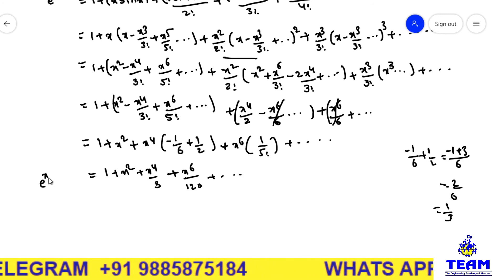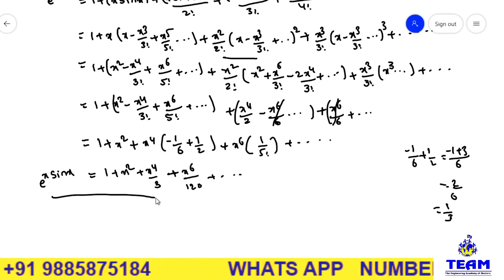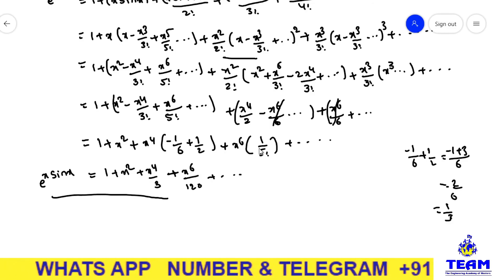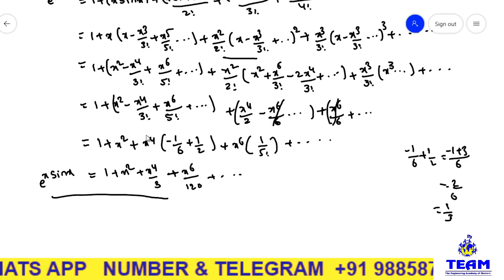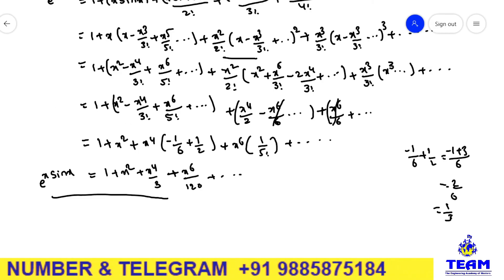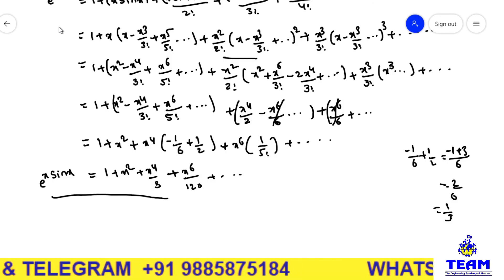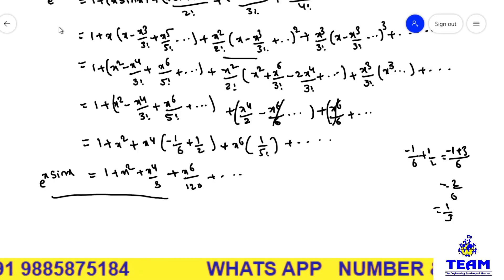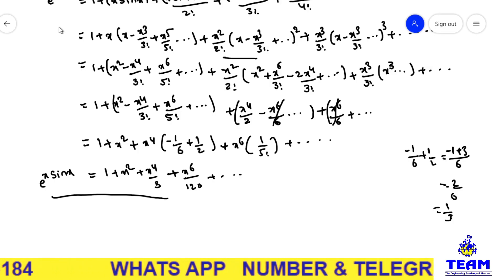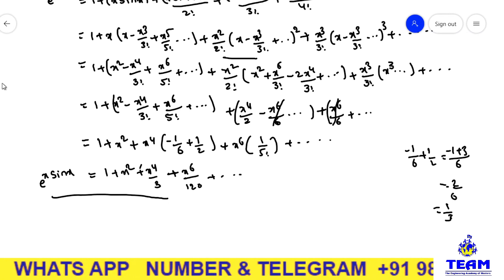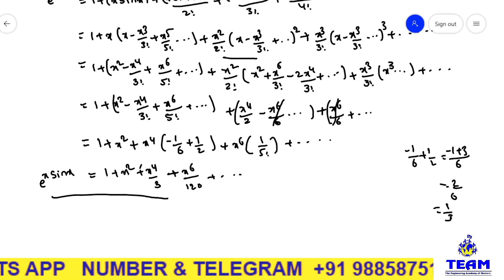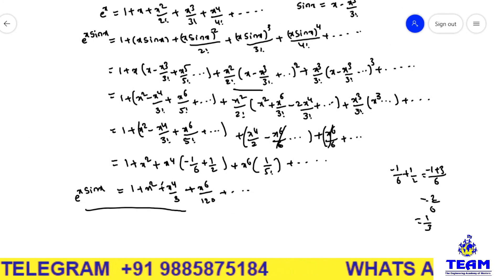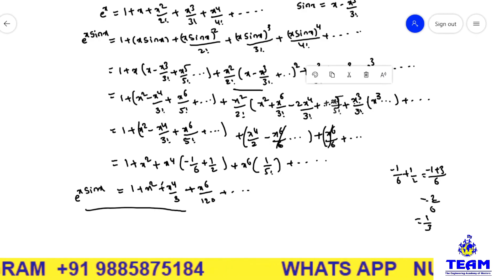This is the McLaurin series value of e^(x·sin x). Here I used the sin x and e^x McLaurin series expansions. You can also do this problem by the other method: finding first, second, third, fourth, fifth derivatives — but that is very lengthy, which is why I explained it this way. Even in the other method you will get full marks, don't worry.